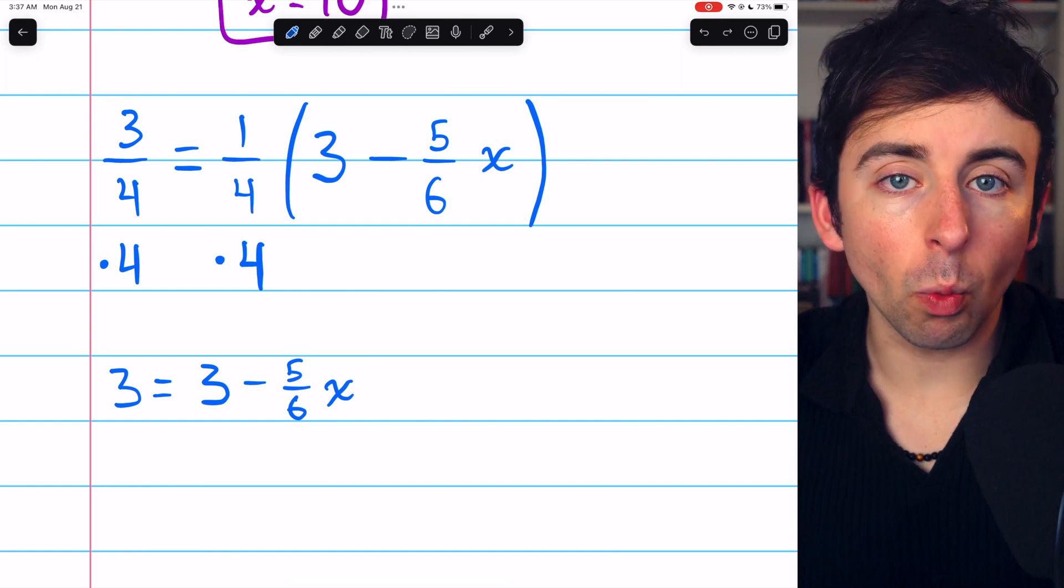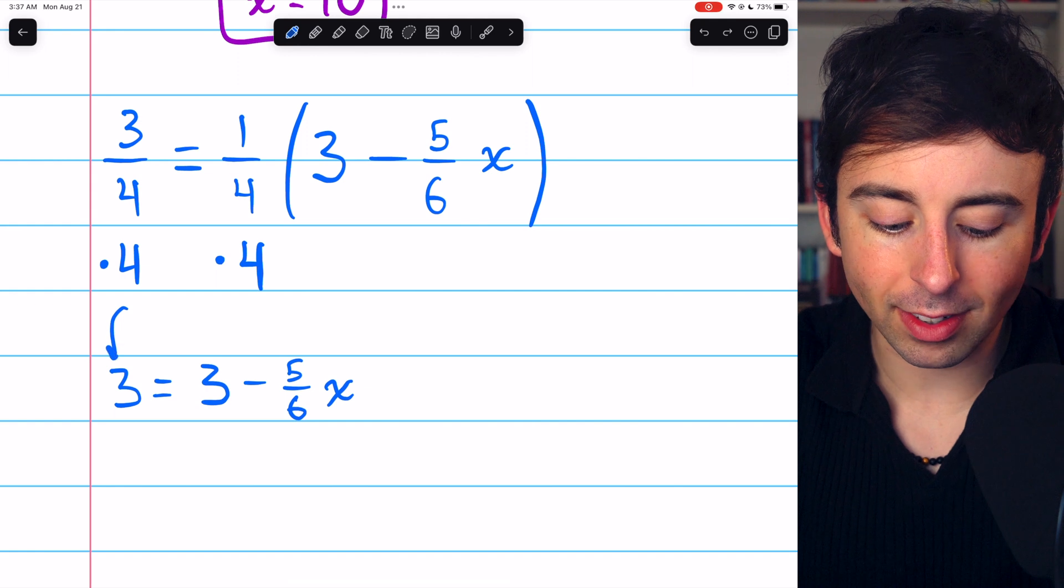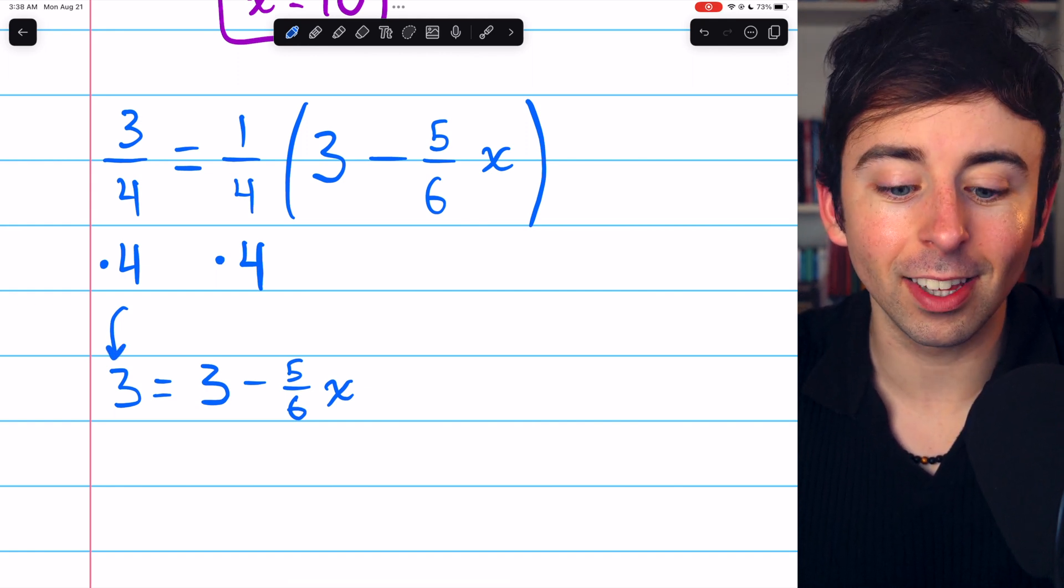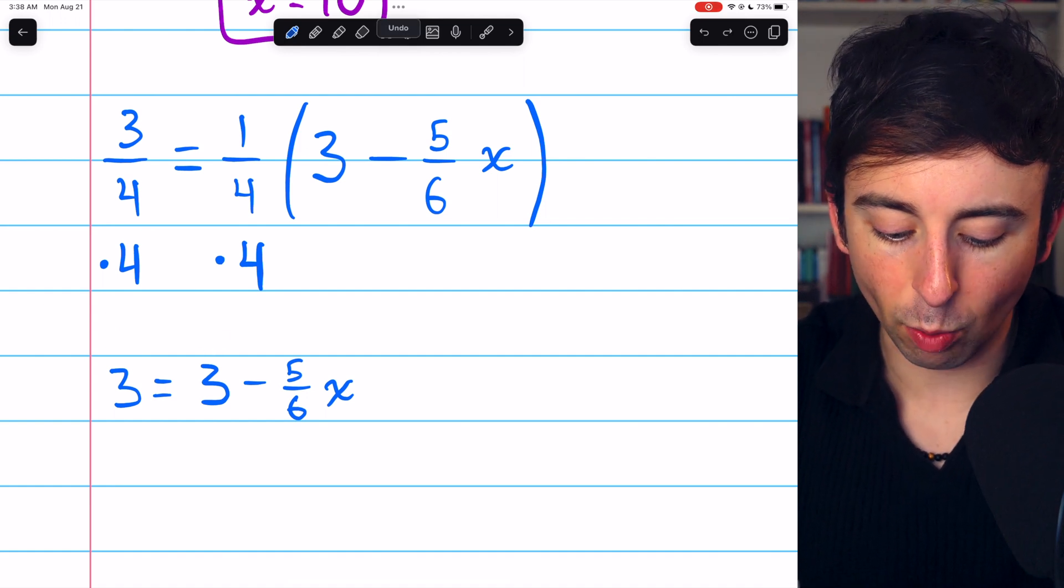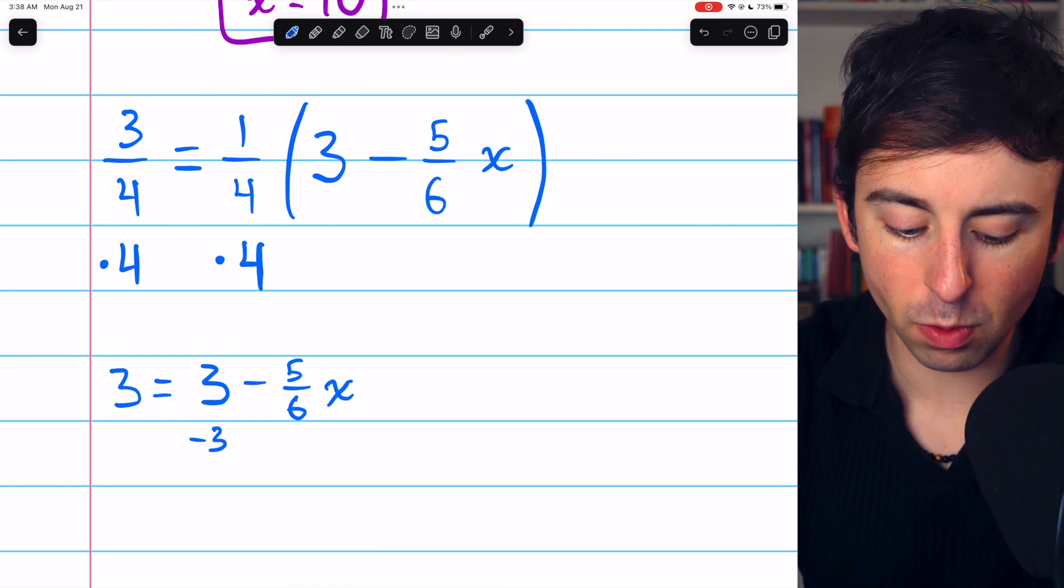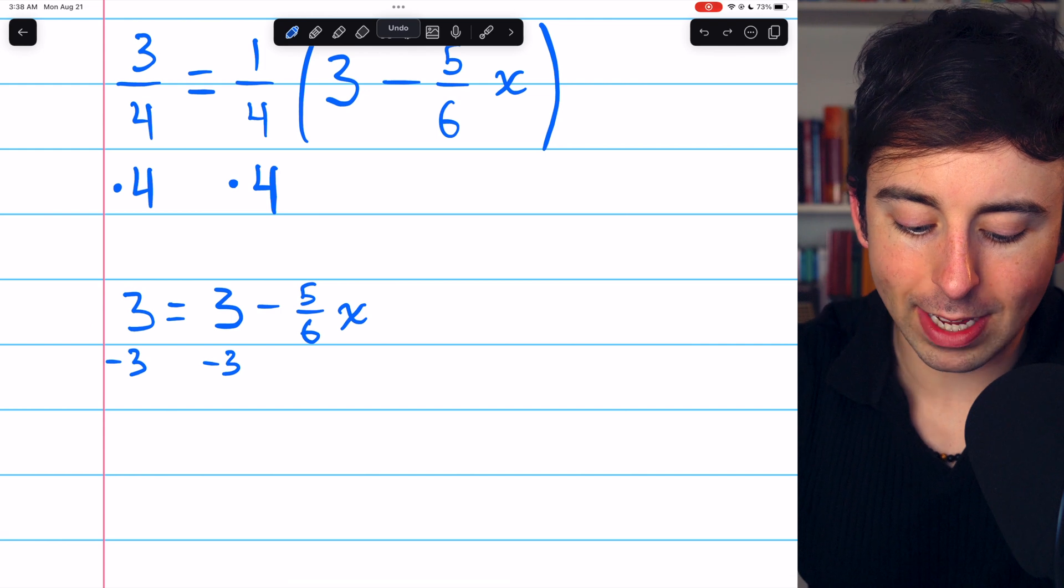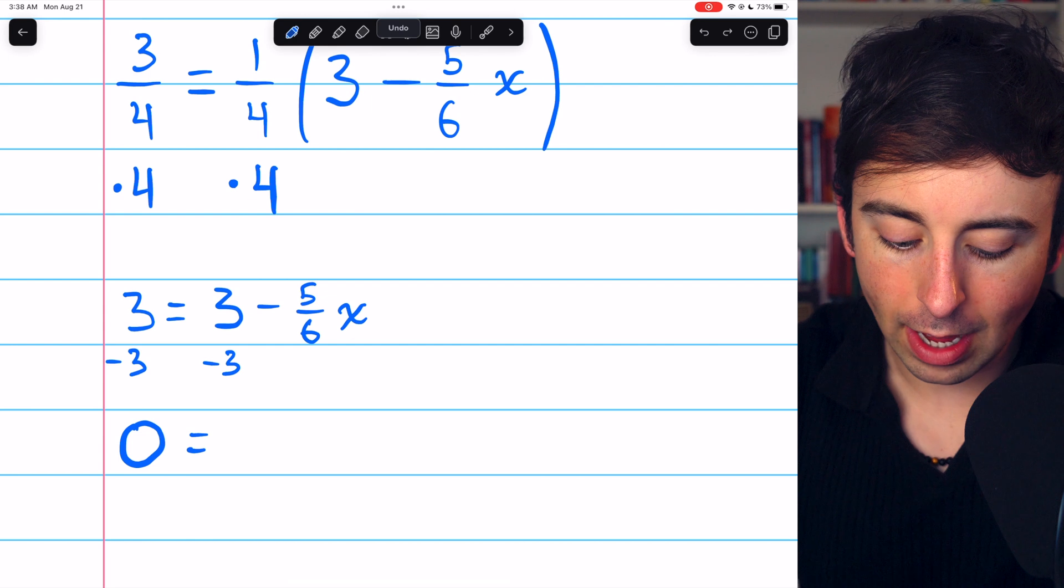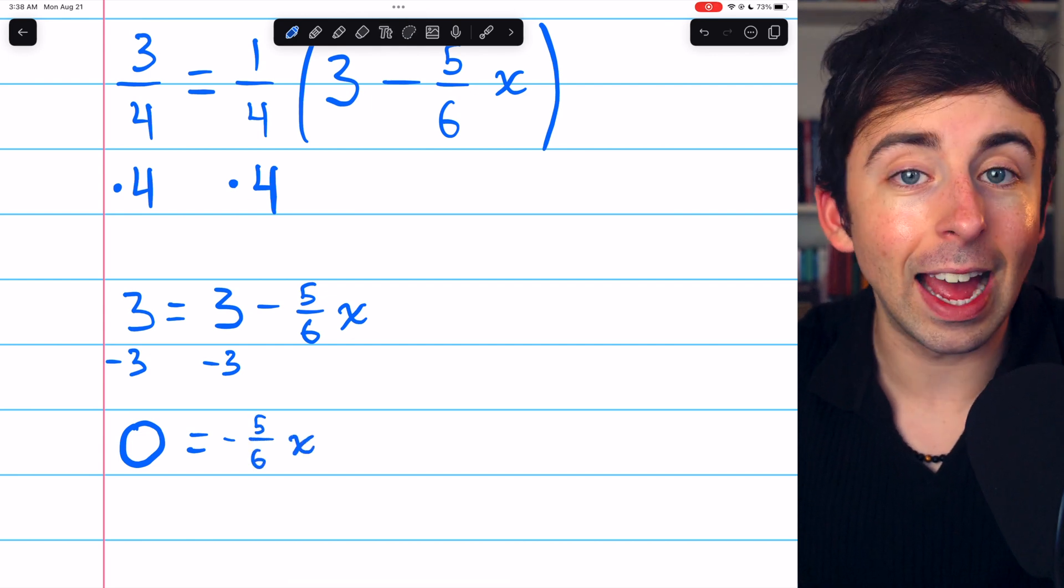We want to gather all variables on one side and all constants on the other. We already have a constant on the left side all by itself, so let's move all constants to the left side. The only constant that we have on the right side is 3, so to get rid of that, we have to subtract 3 from both sides. On the left, 3 minus 3 is 0. On the right, the 3 and the minus 3 cancel out, and so we're just left with minus 5/6x.